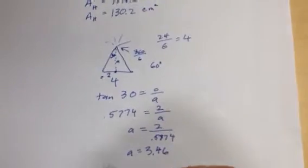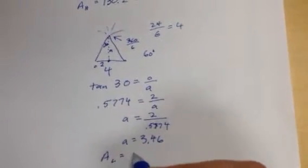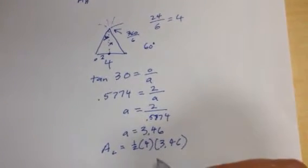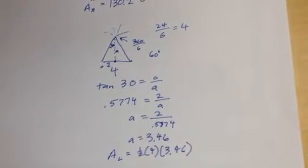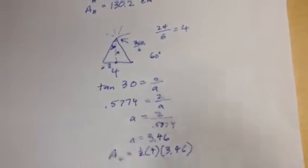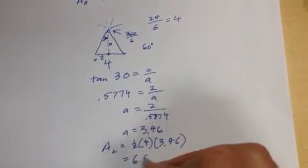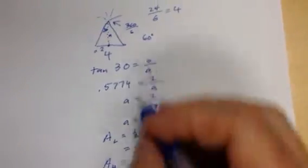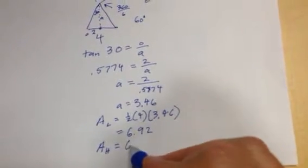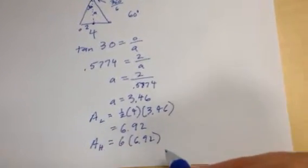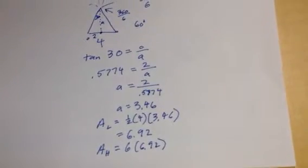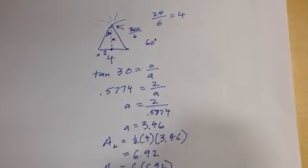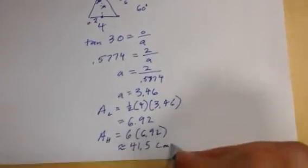My base of the whole triangle is 4. So my area of my little triangle is 1 half 4 times 3.46. So that's going to be 6.92. And then the area of the whole hexagon is how many of those little triangles there are, which there are 6 of them. So it's 6 times 6.92.